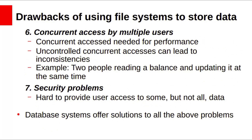The problem of concurrent access by multiple users: Concurrent access is needed for performance. Concurrent access means the same data from the same file is accessed by multiple users at the same time. In a file system, concurrent access leads to incorrect data. For example, two people reading a balance and updating it at the same time. In a file-based system, when an application opens a file, that file is locked, meaning no one else has access to the file at the same time. Uncontrolled concurrent access can lead to inconsistencies within the database.